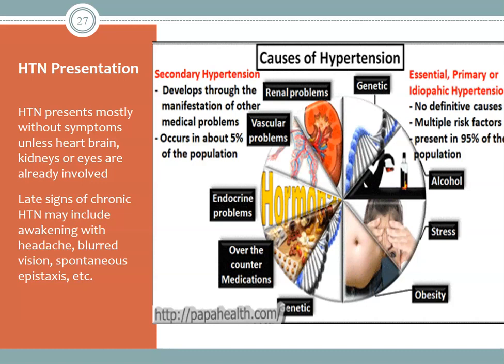Hypertension usually presents without symptoms unless other organs are involved — kidneys, vascular system, endocrine system, or there's a genetic connection. In late stages, we see blurred vision from vessel changes in the eyes, and neurologically a severe headache can indicate hypertensive crisis. Patients who stop their hypertension medication abruptly experience rebound hypertension with severe headaches that can be life-threatening. We must educate patients never to stop their antihypertensive medications abruptly. Over time, hypertension causes secondary damage to all organs.